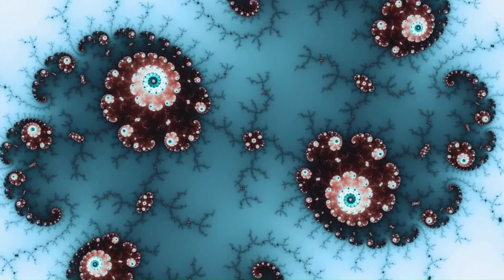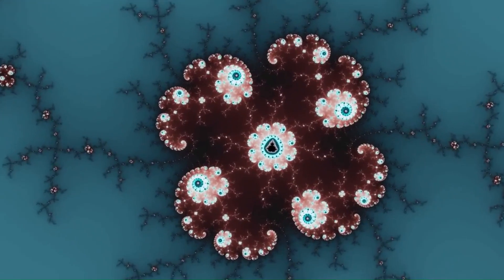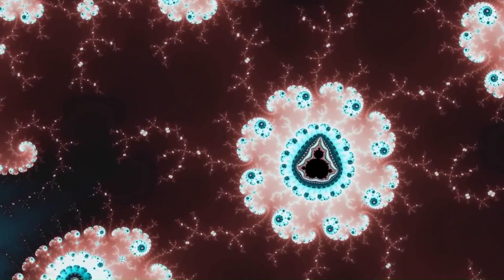First of all, how is the Mandelbrot set defined? If we start with a quadratic function, z squared plus c, where we think of c as a parameter, what we can do is start with zero and iterate this function repeatedly, and we look at the values we get. The Mandelbrot set is the set of values of c so that the sequence remains bounded.